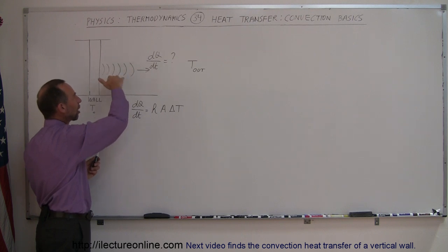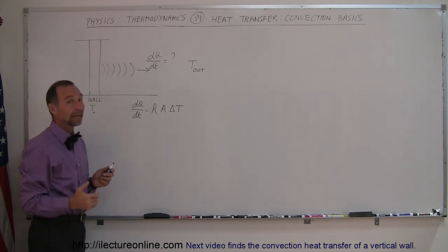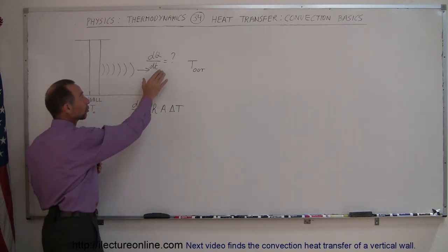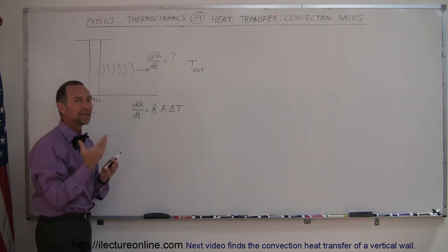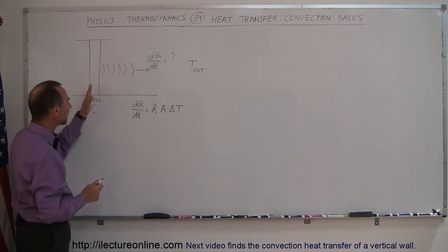The air starts moving away from the wall. There's going to be convection currents caused by the temperature difference, and so what we're going to try to do is determine dq/dt, the amount of heat being taken away from the wall by the moving air.